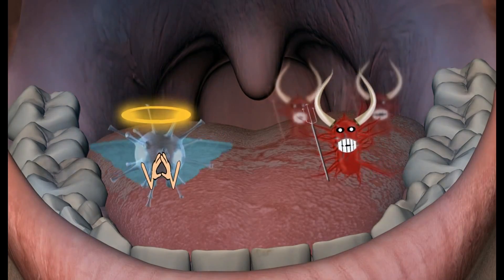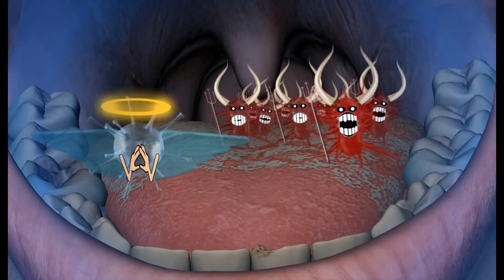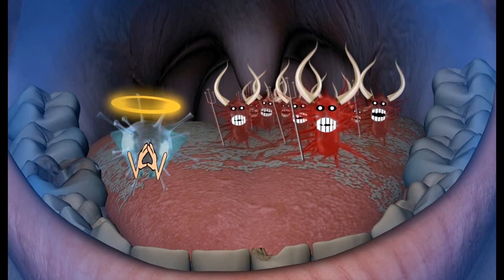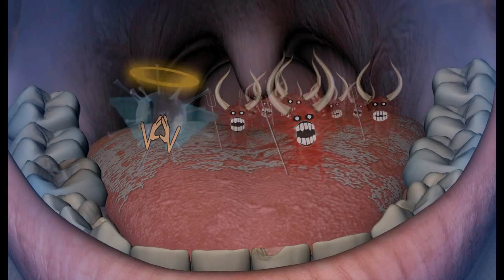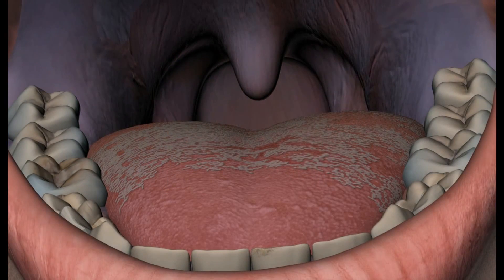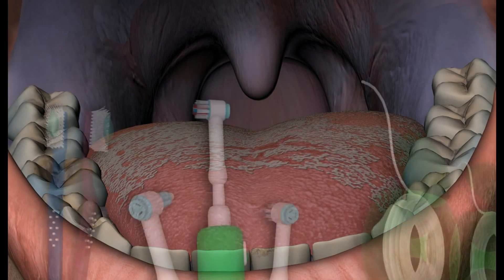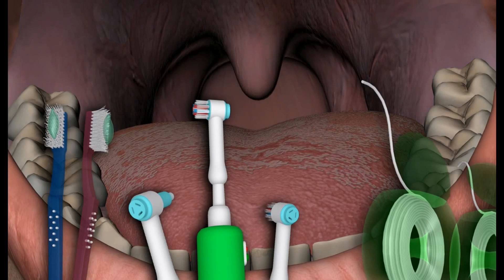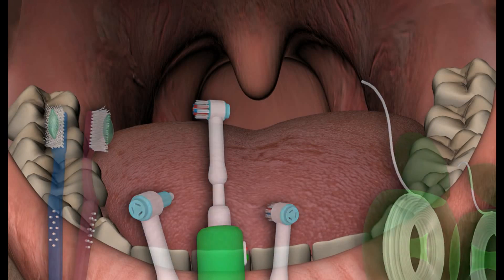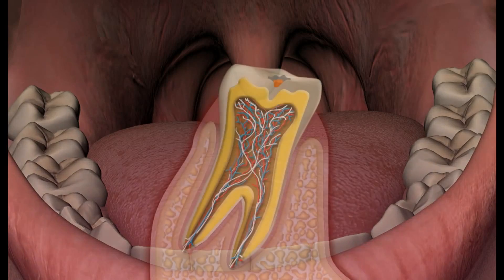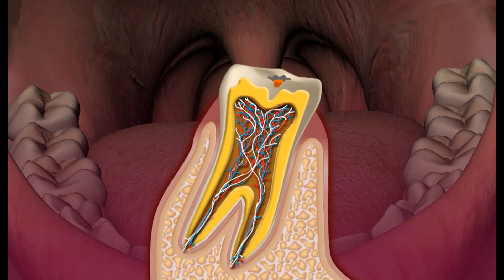If unorganized, mouth bacteria is not harmful. Only mature plaque can cause caries and periodontitis. Therefore, it's very important for everyone to remove plaque efficiently with the help of a toothbrush, dental water jets, and floss. By doing so, the bacteria are deprived of their habitat. Without this habitat, they cannot cause any more harm.